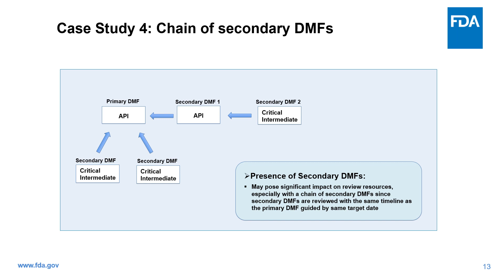From time to time, we see more than one secondary DMF associated with a primary DMF. The presence of secondary DMFs may pose a significant impact on review resources, especially with a chain of secondary DMFs, since secondary DMFs are reviewed in the same timeline as the primary DMF guided by the same target date.